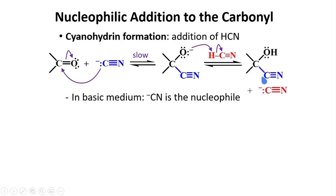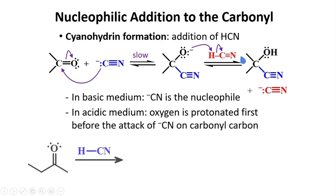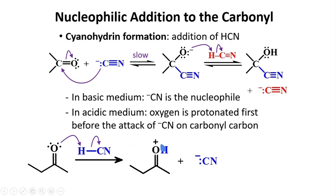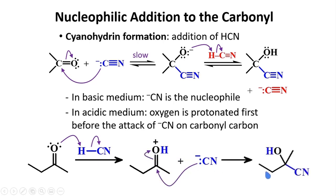The cyanohydrin involves a cyano group attached to a carbon for which a hydroxyl group is also attached. This can also work in acidic medium. Here, the oxygen is protonated first before the attack of the cyanide on the carbonyl carbon. Upon protonation, you will have an oxygen that is positively charged, and this oxygen will be more electronegative, and it will attract the cyanide to attack the carbonyl carbon, and you will form your cyanohydrin.